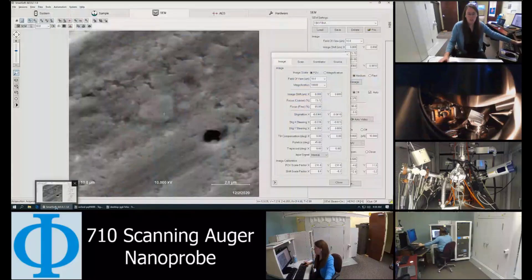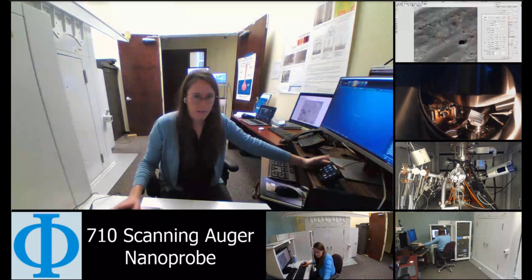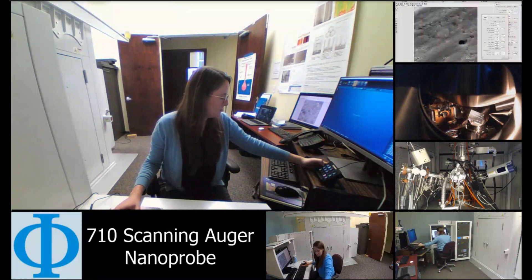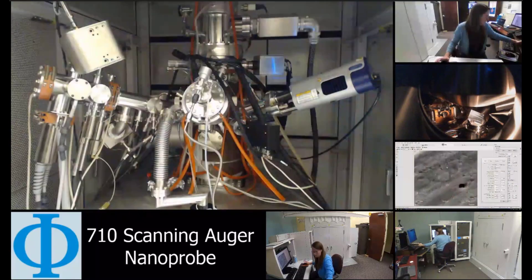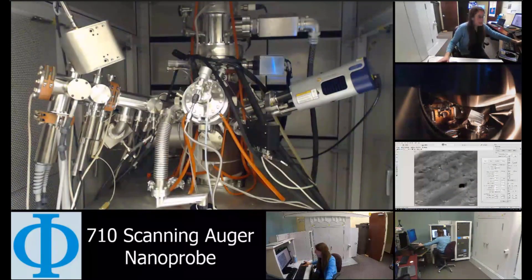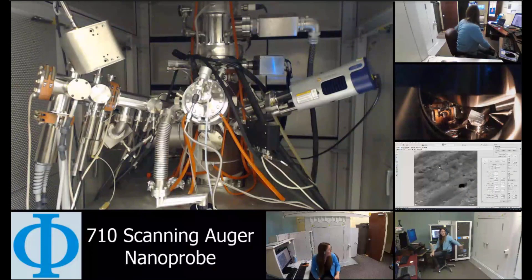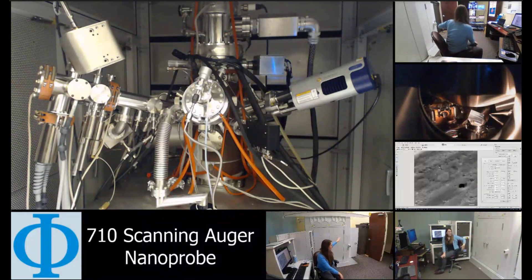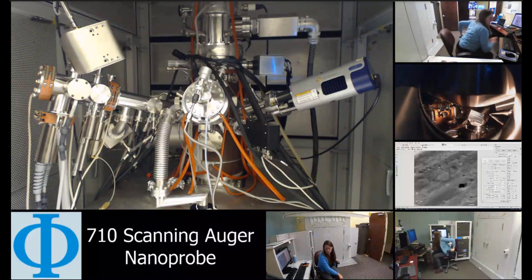The big screen that you're seeing right now is the Auger software, and then the face camera from the computer. I also wanted to show you this screen, which is a live image of inside the chamber. If you open up these doors, this camera is actually pointed inside the doors so you can see all the attachments we have on our system.